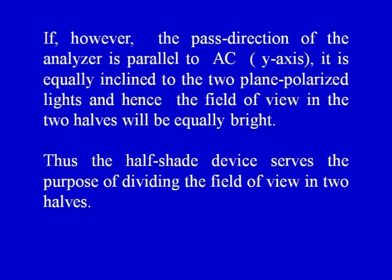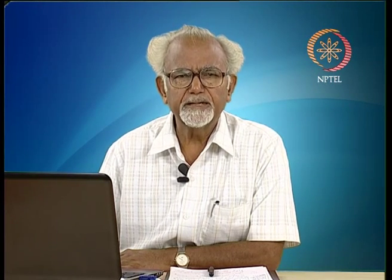When the pass direction of the analyzer is parallel to AC — the Y-axis — it is equally inclined to the two plane polarized lights, and the two halves will be equally bright. The half-shade device thus divides the field of view into two halves, and a small change in the pass direction of the analyzer makes one half brighter and the other darker. When the analyzer is slightly rotated from the position of equal brightness, a marked change in intensity of the two halves is observed, allowing measurements to be made with much greater accuracy.